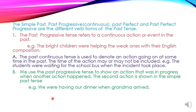Example: we were having our dinner when grandma arrived. Here two actions are present. First action — we were having our dinner — is written in the past progressive tense. Second action — grandma arrived — is written in the simple past tense, V2 form. In simple past tense we have only the V2 form. In past progressive or continuous, we have two words: was/were plus V4, or present participle ING form.